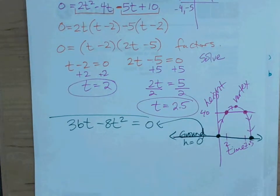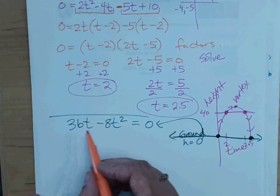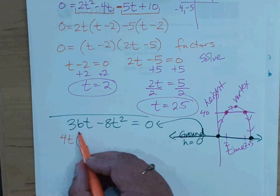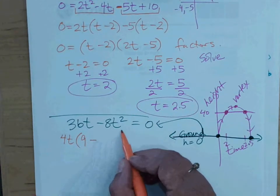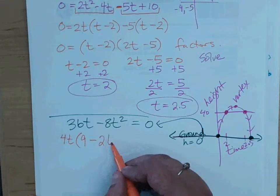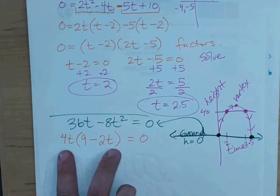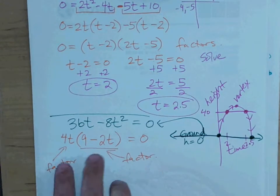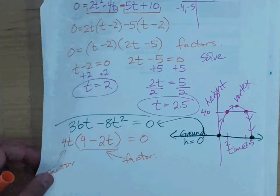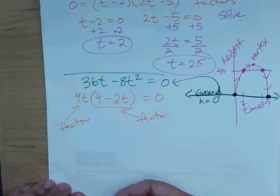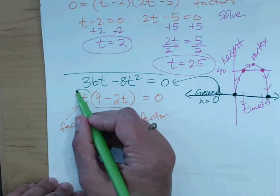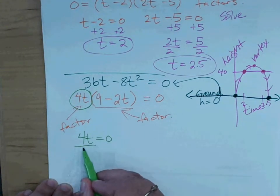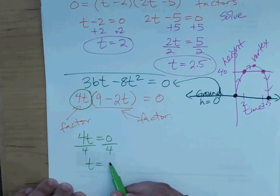Okay, what can we factor out of here? What do they both have in common? You said 4? 4 and t. 4t gets factored out. And what gets left behind? 9 minus 2t equals zero. So if I know this is, this by the way, is one factor and this is another factor. If I know that these two things multiply together to give me zero, what should I do now to solve? Once I've factored, I want to set this 4t equals zero. What number times four gives you zero? t equals zero.